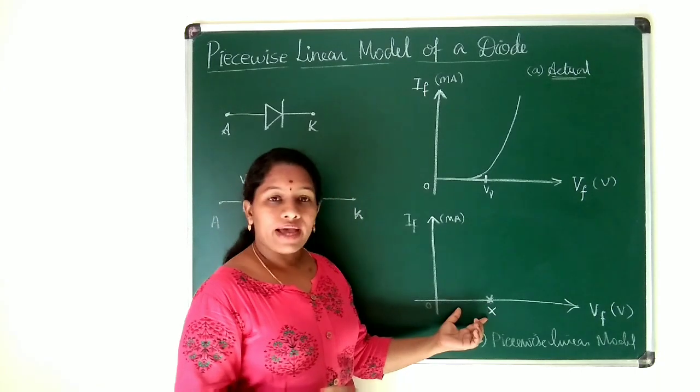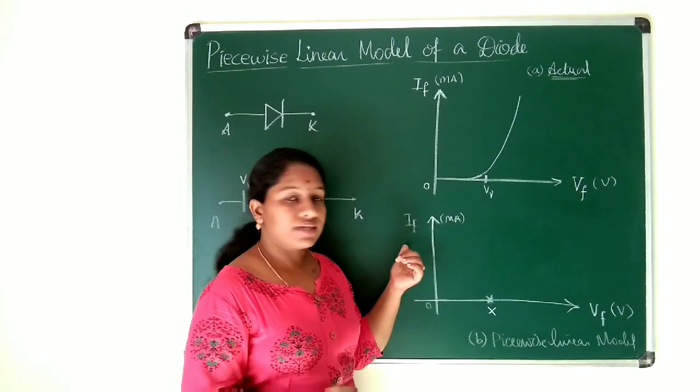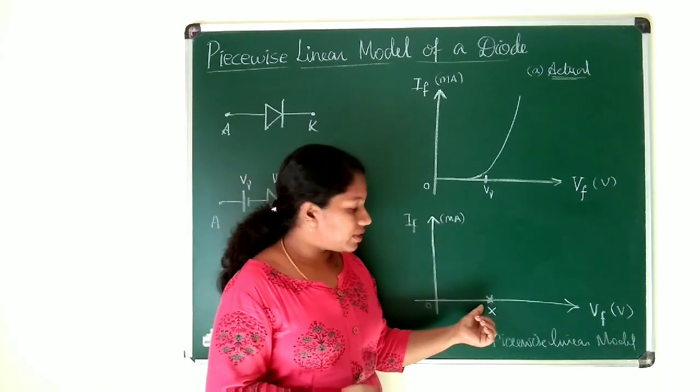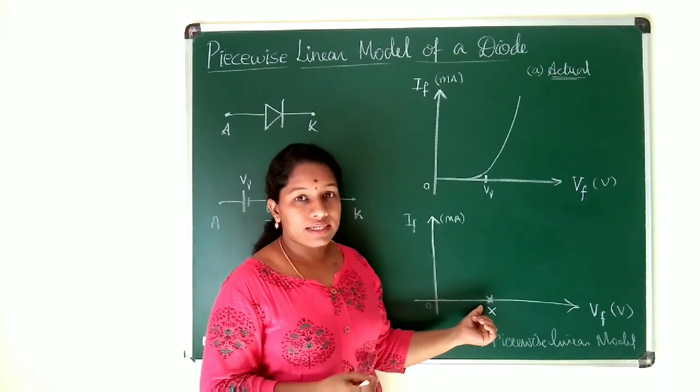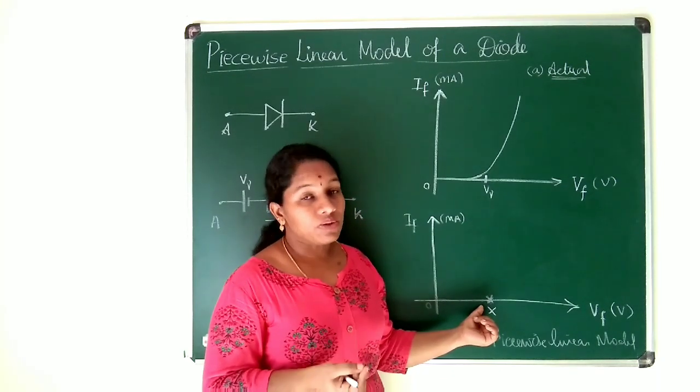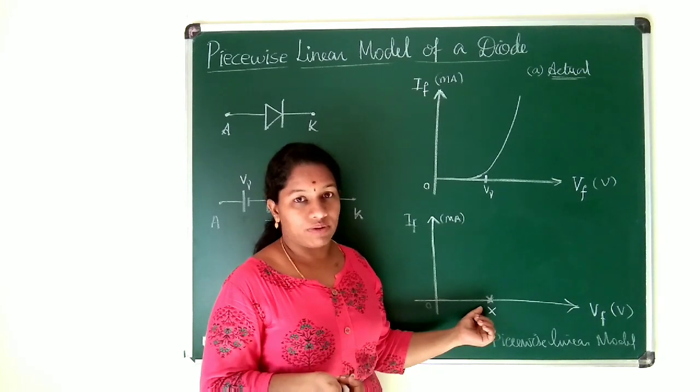We take the same axis, VF versus IF, and mark a point on the X-axis based on threshold voltage. The threshold voltage of a silicon diode is 0.7 volts.